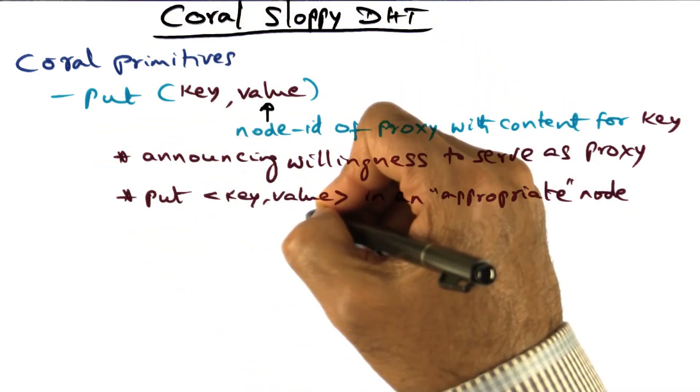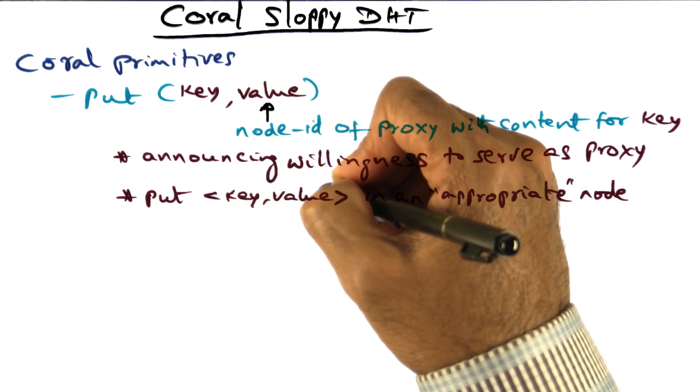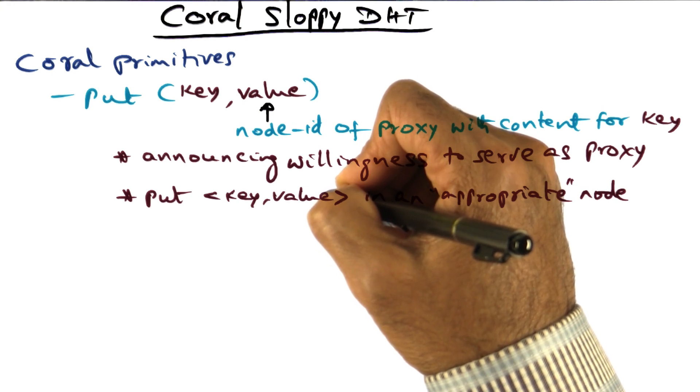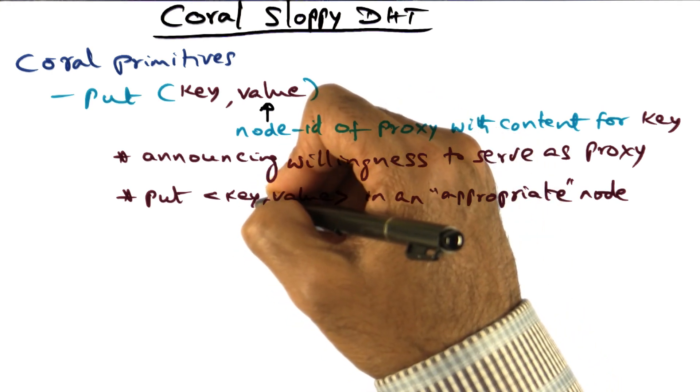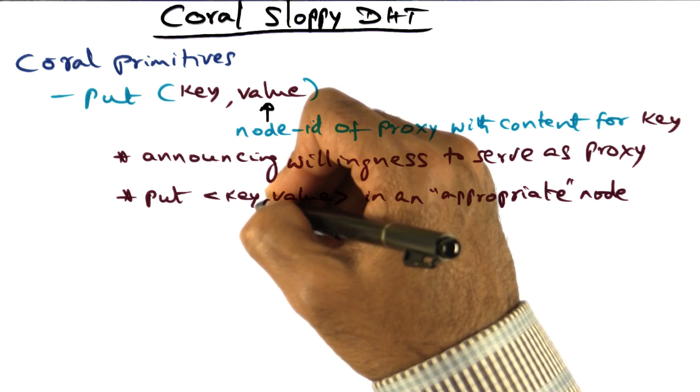And the result of doing the put operation is to store this key-value in some metadata server. That is some node that is going to serve as a name server that can answer queries coming in saying, I'm looking for this key.